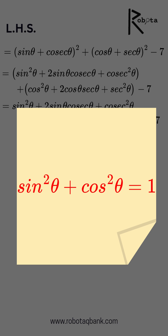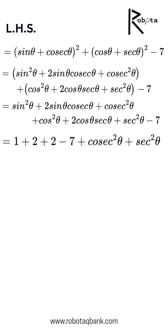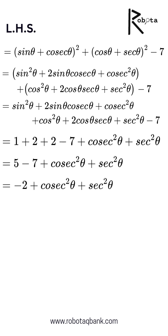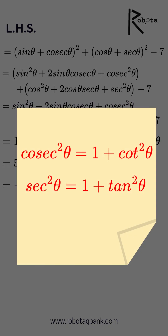So the expression becomes 1 + 2 + 2 + 2 − 7 + cosec²θ + sec²θ. One plus two plus two is five; five minus seven gives us negative two. Now recall the identity: cosec²θ = 1 + cot²θ.